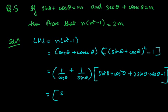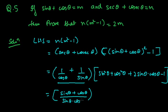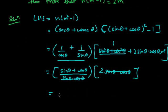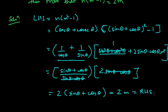So LHS = (sinθ + cosθ)/(sinθ · cosθ) · 2sinθcosθ. The sinθ · cosθ cancels, leaving 2(sinθ + cosθ) = 2m, since sinθ + cosθ = m. Therefore LHS = 2m = RHS. Hence proved.